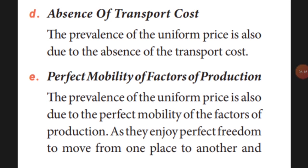Next is the absence of transport cost. If you want to minimize your cost, you should set up business where the demand will be. For example, sweater demand will be near the Himalaya region, so manufacturing near the hill station is better. If you manufacture in hot Rajasthan, transport charges will give you a loss. So to reduce transport charges, go and set up where the product is necessary. This is also called perfect mobility — freedom to move from one place to another.